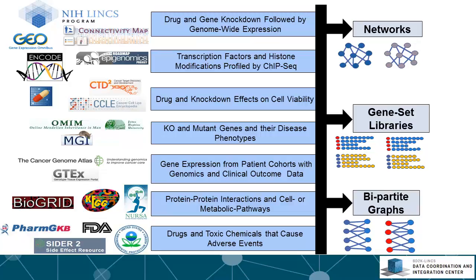We now have more and more gene expression data from individual patients and different tissues of those patients. The GTEx project provides such data combined with genomic sequencing projects. The Cancer Genome Atlas provides a large collection of different data at different regulatory layers from cancer patients, including genomics, transcriptomics, and proteomics from individual tumors across many different types of cancers for large cohorts of hundreds of patients per cancer.